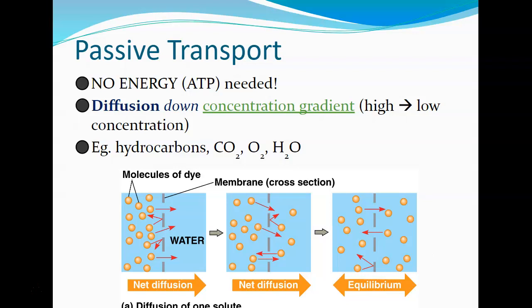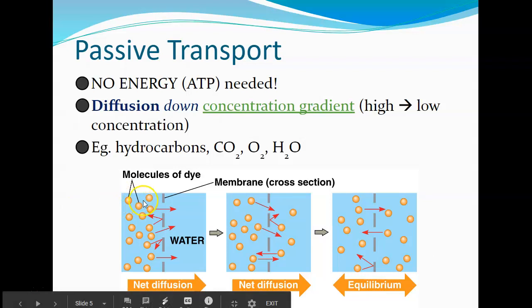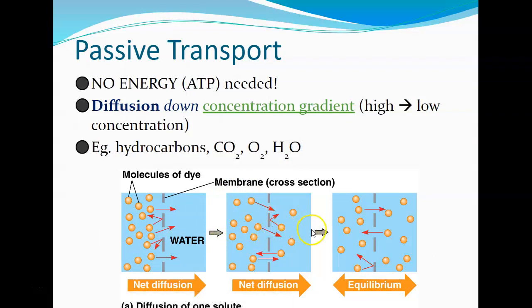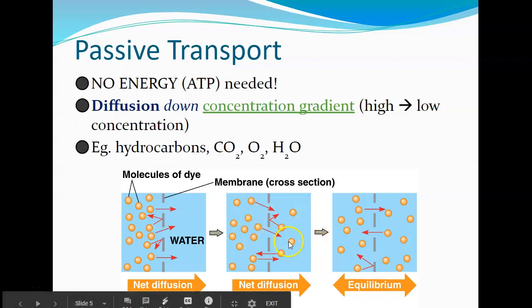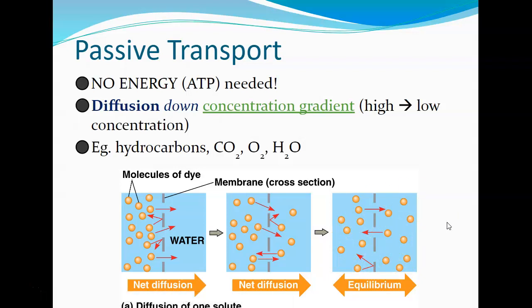In the picture at the bottom, a dotted line represents a barrier with a ton of molecules on the left and nothing on the right. Over time, those molecules move from high concentration to low, and they can move back and forth — they're not locked on one side. They move equally back and forth until they reach equilibrium, then continually go back and forth.